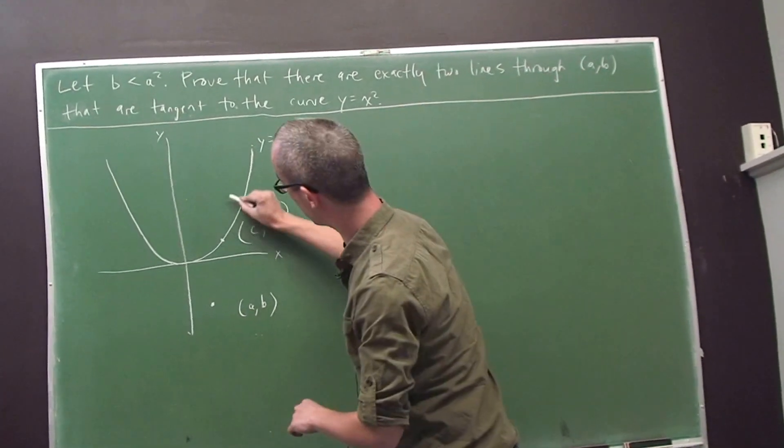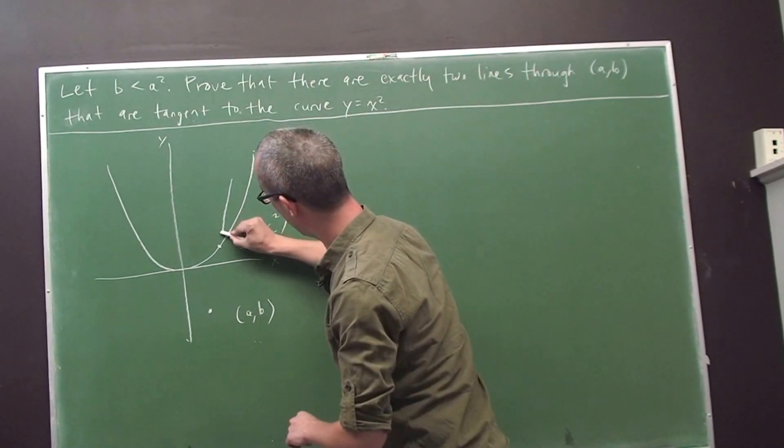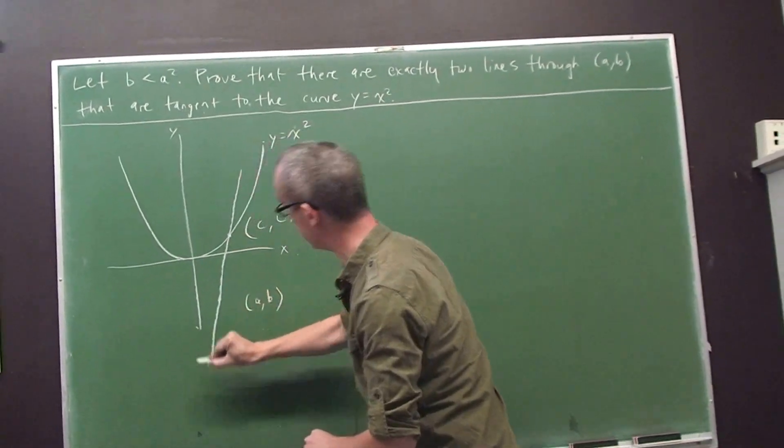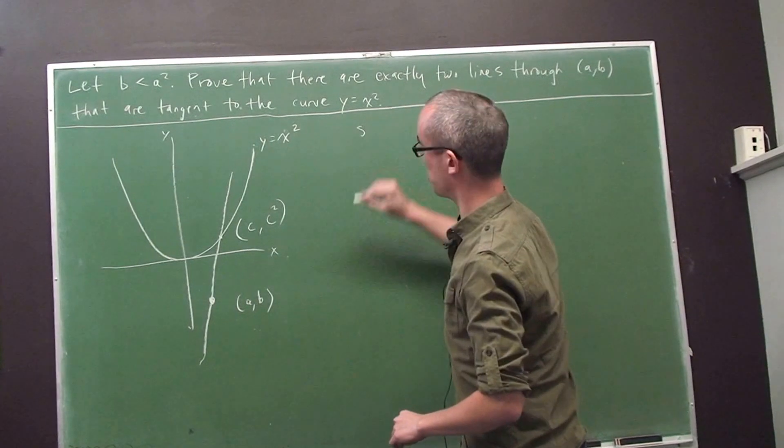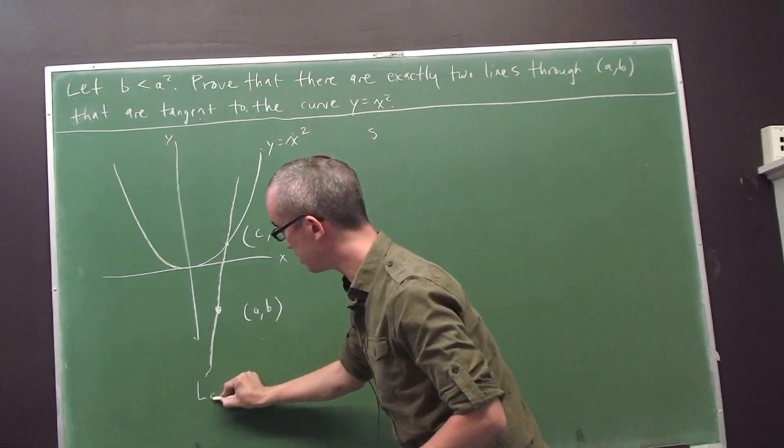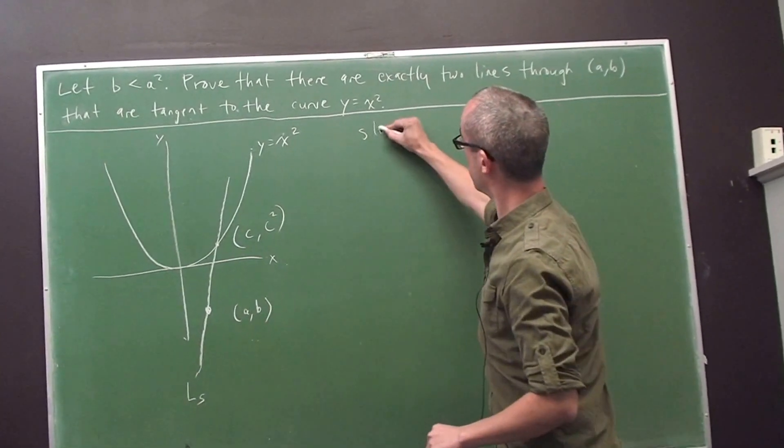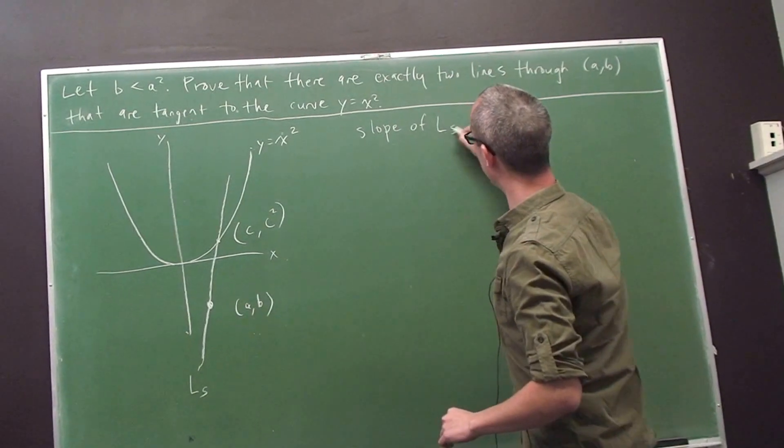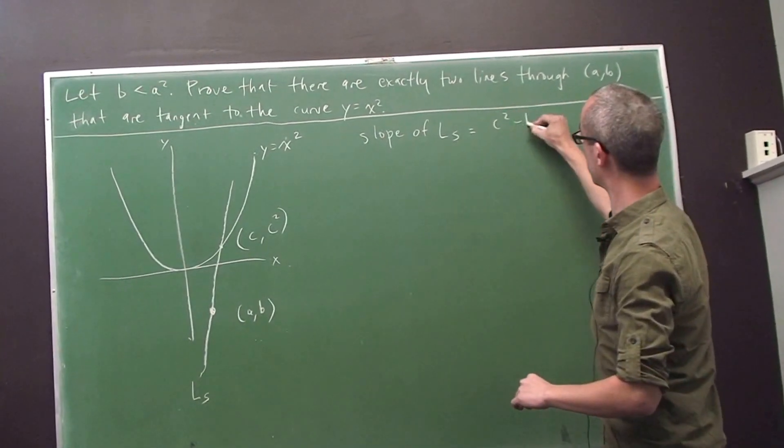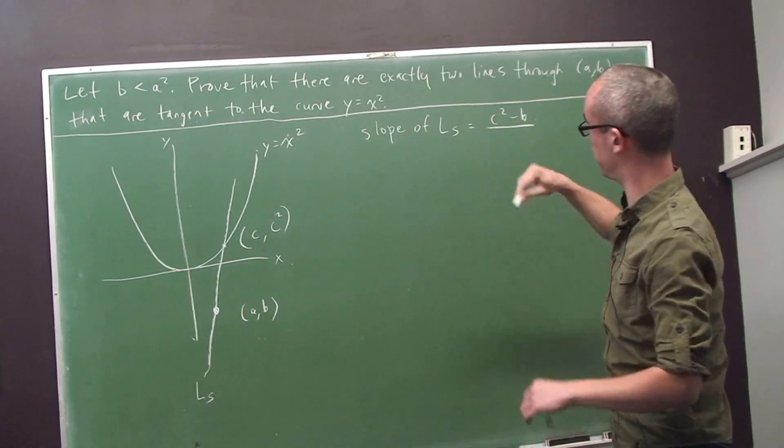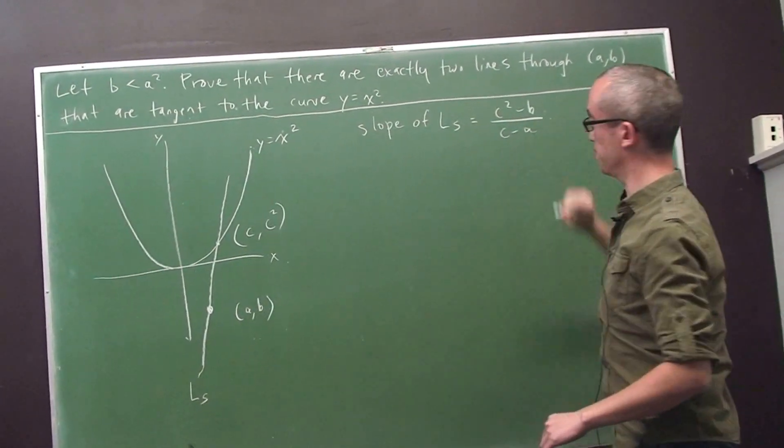Now certainly I can find the slope of the line through my point (c, c²) and the point (a, b). So if we call this line L sub s for the secant line, the slope of L sub s is the rise over the run. It's the difference in the y values, c² minus b, over the difference in the x values, c minus a.